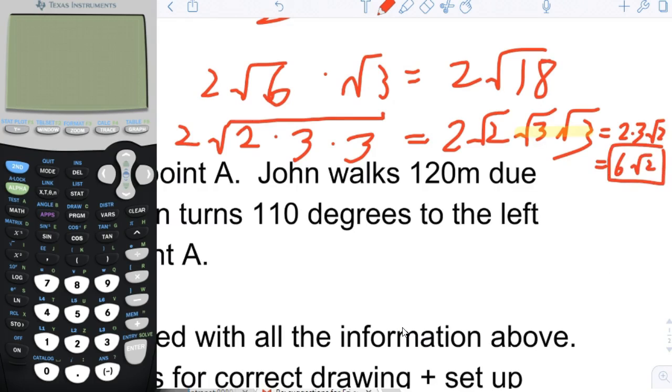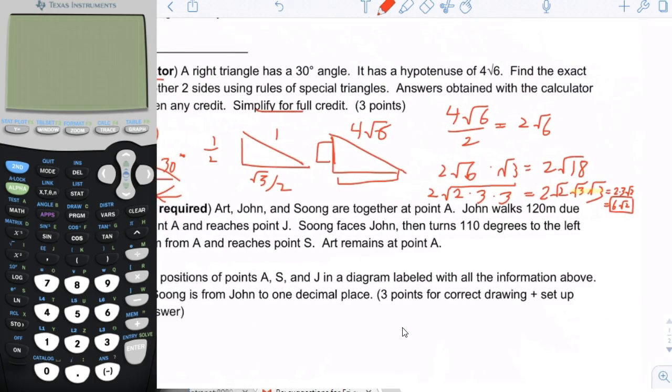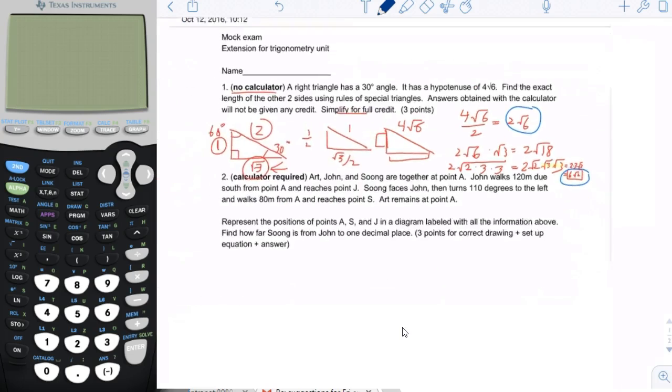So now I have 2 times 3 times square root of 2, which is equal to 6 square root of 2. And that is the final answer for the longer side. So the shorter side is 2 square root of 6, and the longer side is 6 square root of 2.